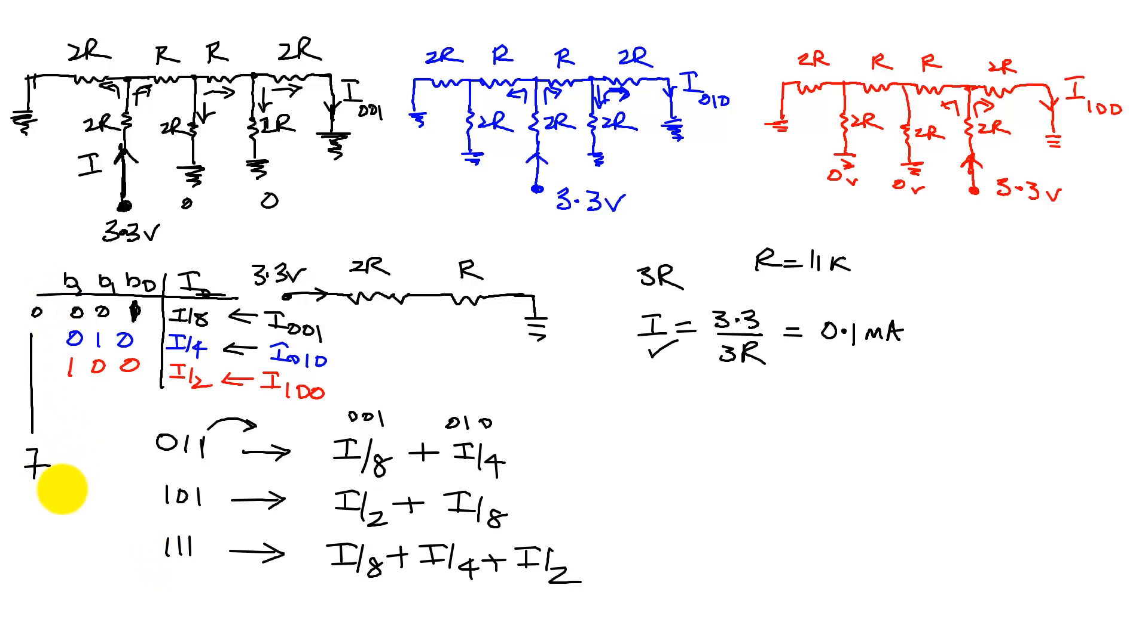And the higher the digital value, the higher the current. And that's how we know it is doing a digital to analog conversion.